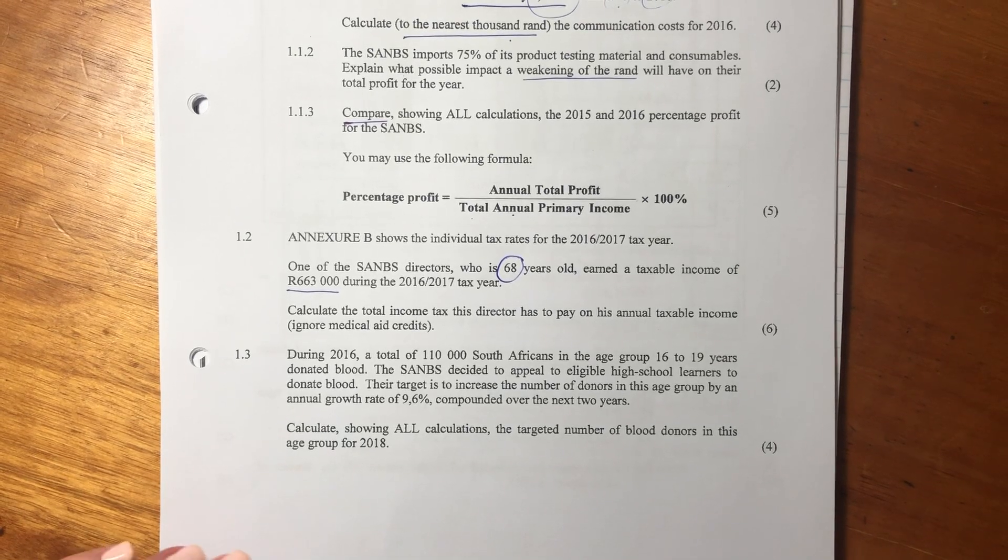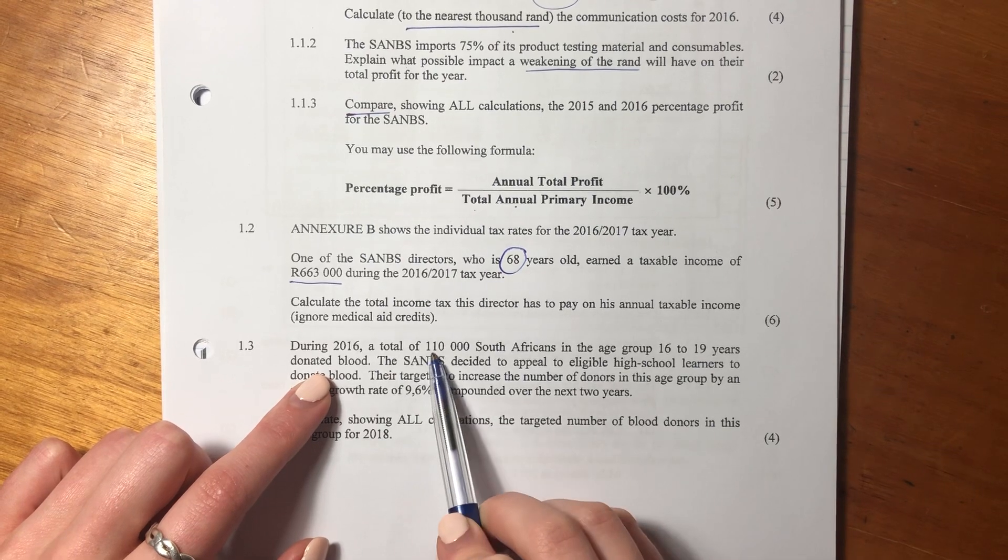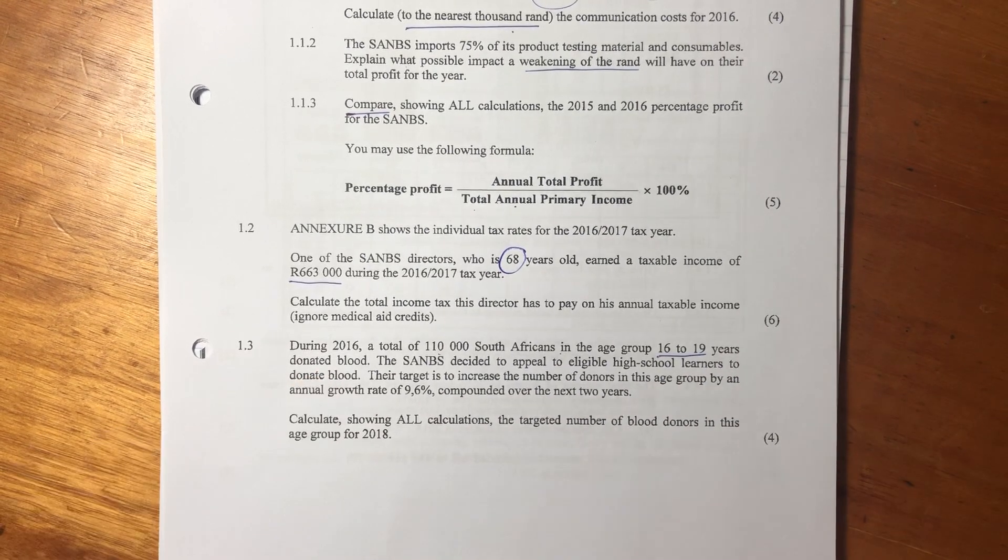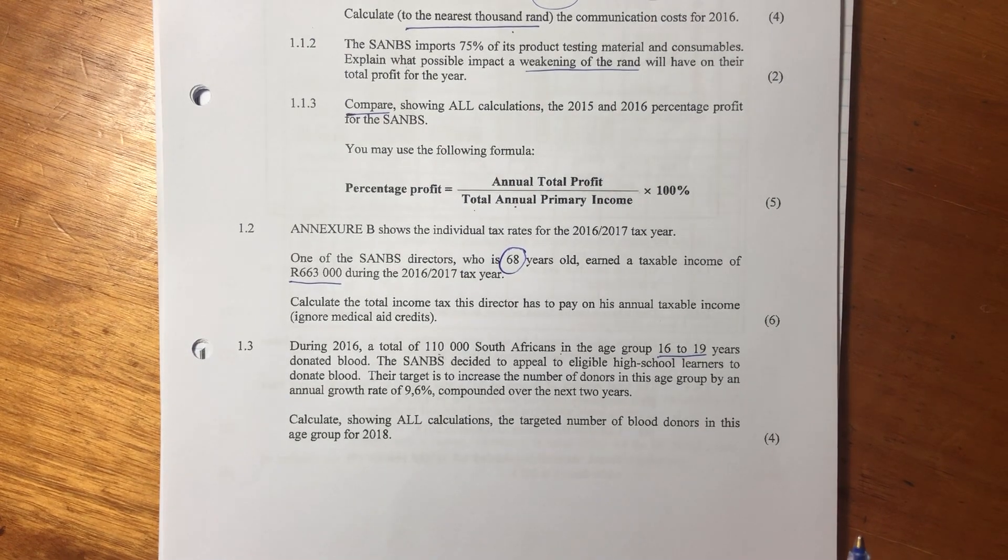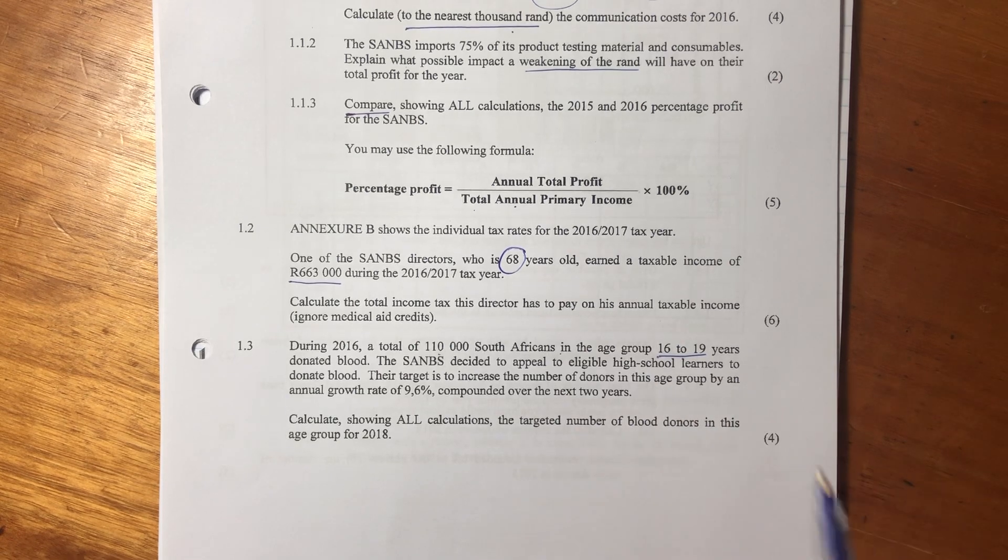Okay, let's now look at 1.3. So it says, during 2016, a total of 110,000 South Africans in the age group 16 to 19 years donated blood.